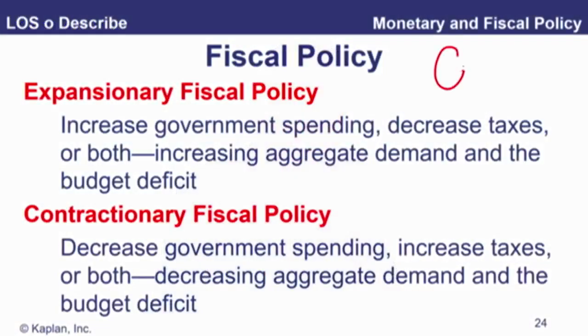For fiscal policy, we are talking G and T — government spending and taxation. If we're being expansionary, we are going to increase government spending. That's the G of C plus I plus G plus X minus M, so it directly impacts GDP. Decreasing taxes will increase personal disposable income, and if you increase personal disposable income, that should increase consumption. So you're hitting government spending directly and, via taxes, consumption.